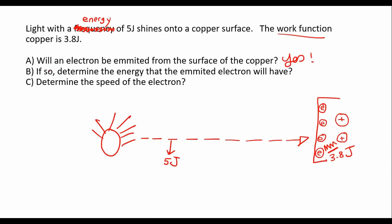Part B says, if so, determine the energy that the emitted electron will have. We can say that the energy coming in equals the work function plus the kinetic energy. So 5 equals 3.8 plus the kinetic energy. The kinetic energy will be 5 minus 3.8, which equals 1.2 joules.